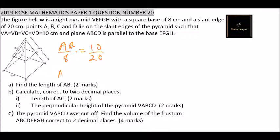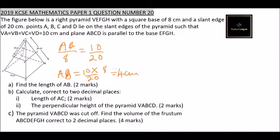Therefore AB equals 10 multiplied by 8, divided by 20, which gives you 4 centimeters. So AB is 4 centimeters.